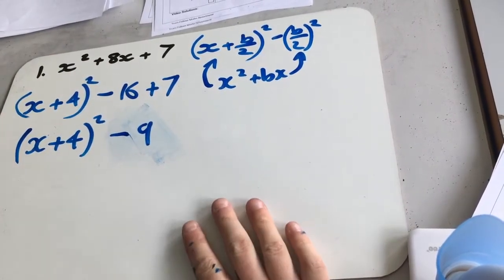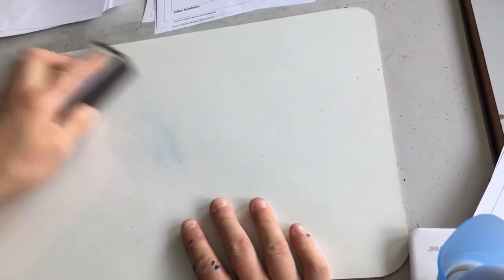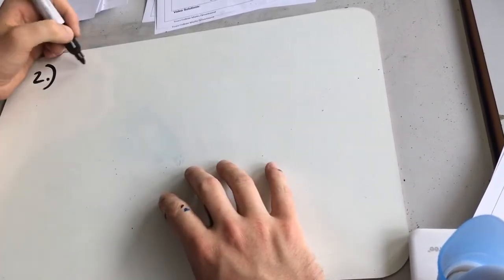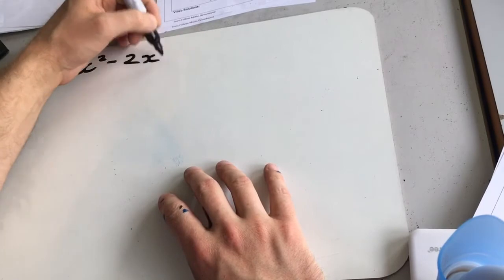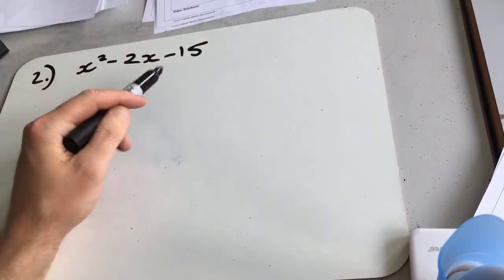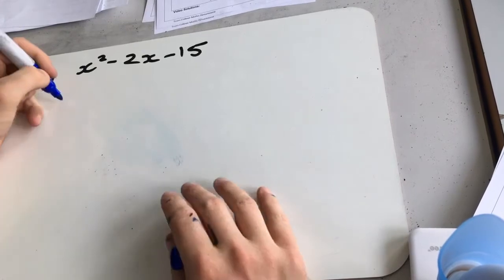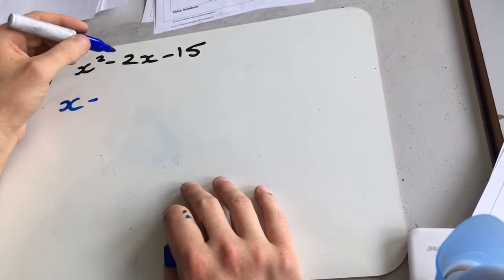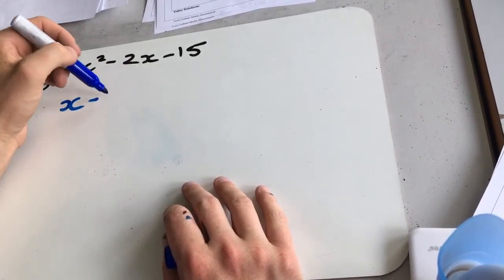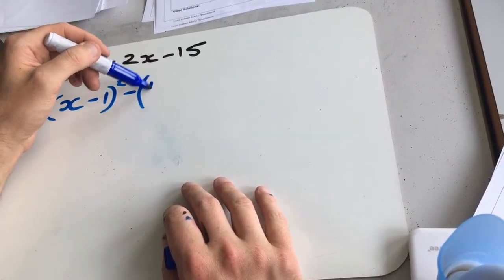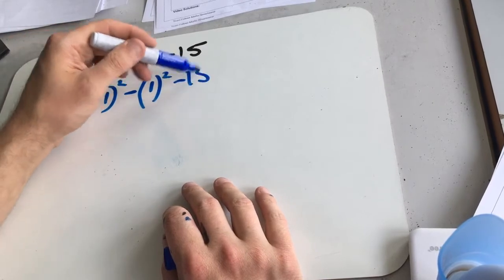Alright, next one. Next one is x squared minus 2x minus 15. So again, we're going to ignore the 15 for now. Half this one and work our way through it. So we get x minus b over 2 is going to be 2 over 2, which is minus 1 squared. Take away 1 squared minus 15.